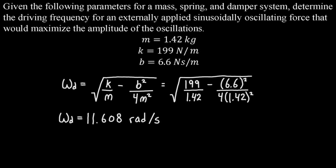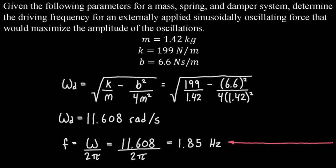So our system completes roughly 11.6 radians every second. We know that a full circle is 2π, roughly 6, so we're almost at two full circles per second. Now what they want is the frequency, not the angular frequency, so we need to convert radians per second into hertz. We can do that by taking our angular frequency and dividing by 2π.